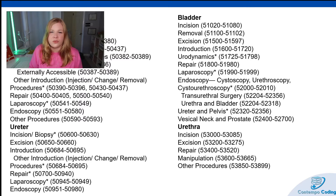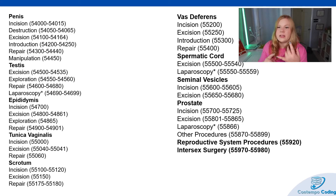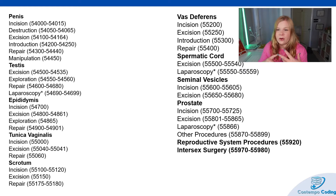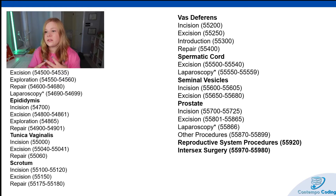The other procedures include things like destruction of transurethral prostate tissue. Then this is the male genital section — fairly similar structure. For the penis we have incisions, destruction (such as for a genital wart), excision, introduction, repair, and manipulation. Then we have testes: excision, exploration, repair, and laparoscopy. Epididymis: incision, excision, exploration, repair. Same structure for tunica vaginalis, scrotum, vas deferens, and spermatic cord. There are only two laparoscopic procedures for the spermatic cord — one for ligation and one unlisted. Then incision and excision of seminal vesicles, and codes for the prostate: incision, excision, laparoscopy, other procedures, reproductive system procedures, and intersex surgery.